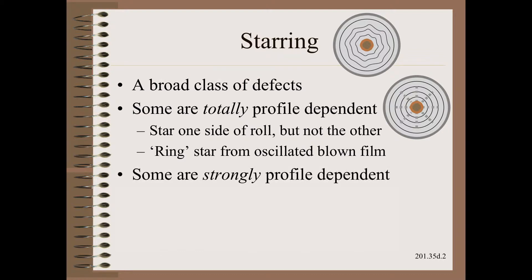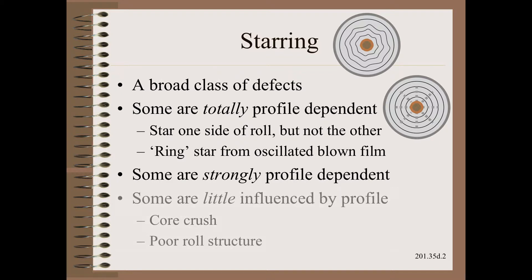Some other types of starring are made worse by profile, though not directly caused by profile. Finally, a few types of stars are not affected much by reasonable profile variations. Examples here include core crush and poor roll structure.